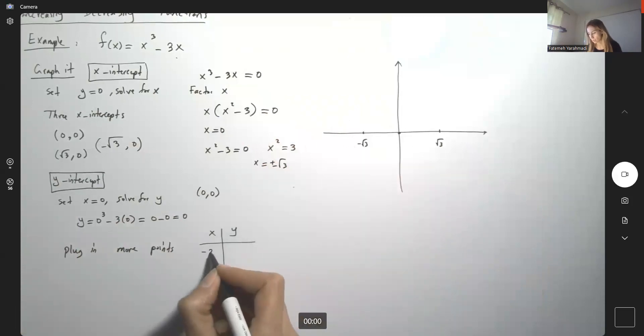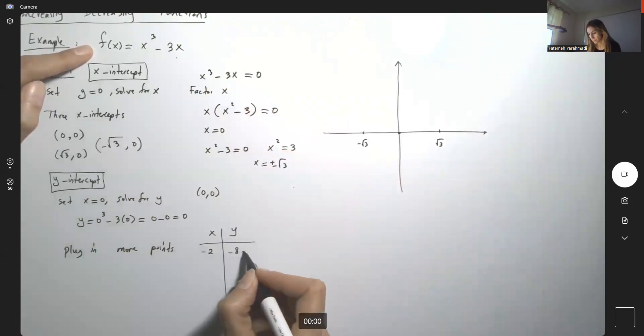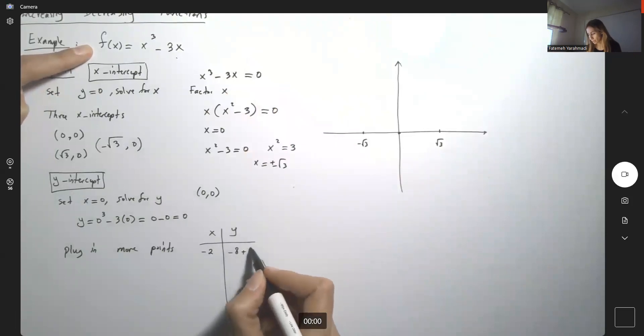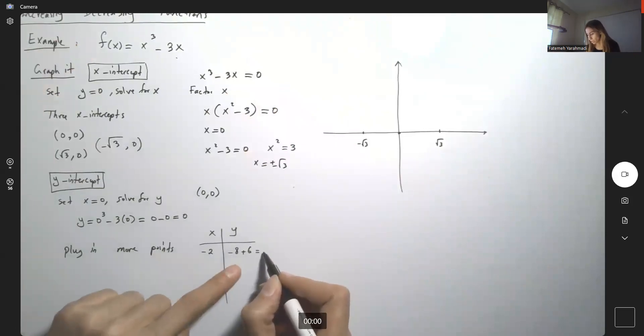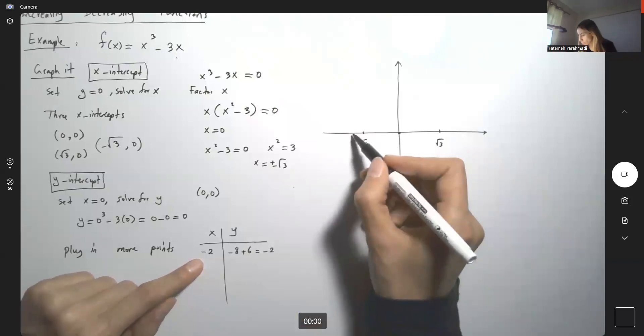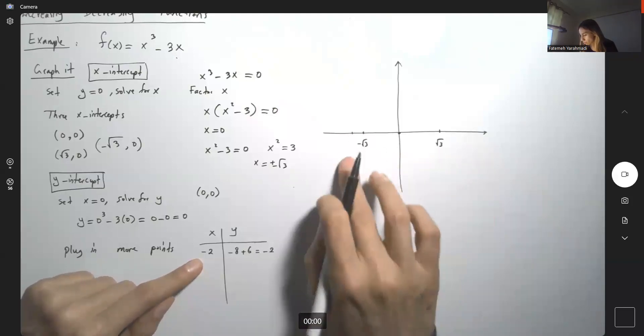Suppose I plug in -2. If I plug in -2 into this function, I get (-2)³ = -8, minus 3(-2) = +6. This gives -8 + 6 = -2. So the point (-2, -2) is down here.